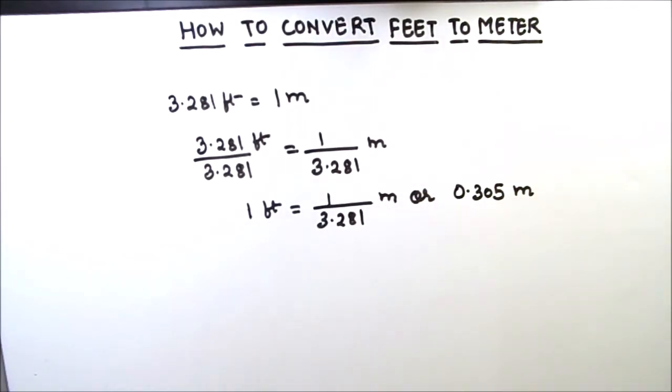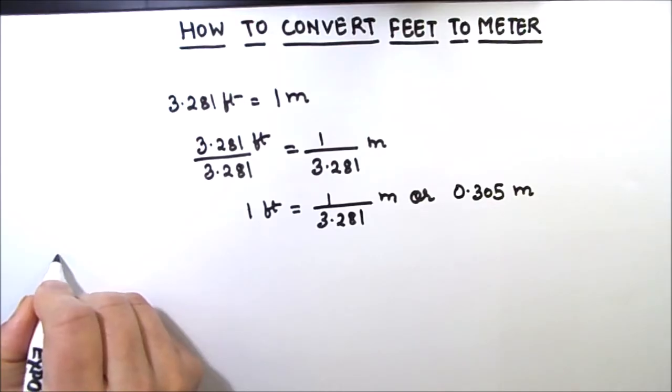So for converting from feet to meter, we need to multiply the feet quantity by 0.305 meters. Let us solve a few examples.